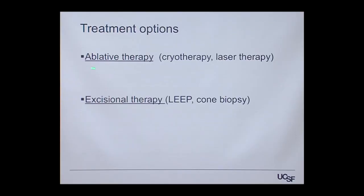Once we confirm precancer, we treat to prevent cancer — similar to removing a suspicious mole to prevent it from becoming a melanoma. We can treat abnormal areas with ablation — burning or freezing them off — or with excisional therapy, where we remove the tissue.